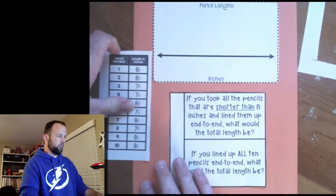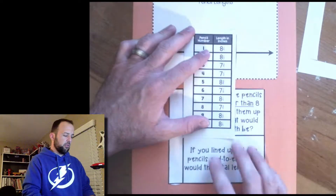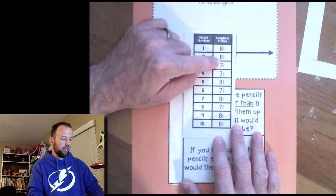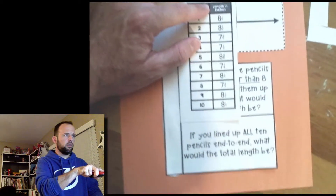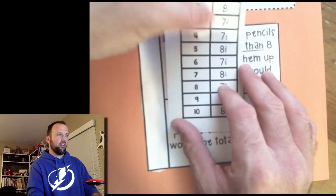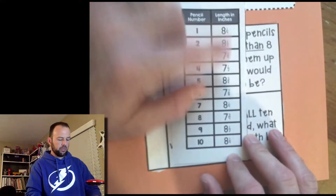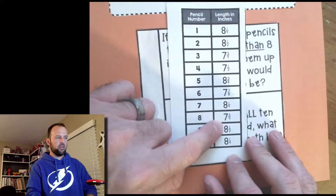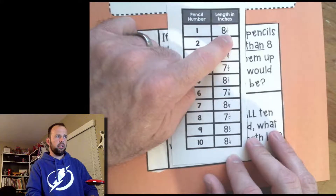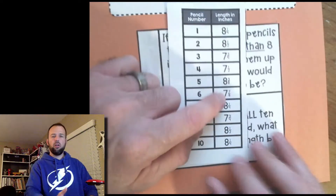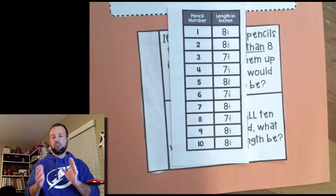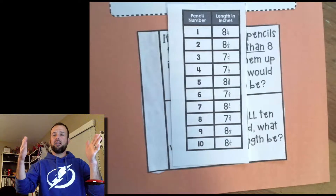Looking at the data, I can see numbers like eight and a quarter, eight and a half, seven and three-fourths, seven and a half. Everything is greater than eight but nothing over nine, and I don't see anything less than seven. So seven and nine should be our two endpoints — seven is as small as we need to go, and nine is as big as we need to go. Everything else will fall somewhere in between.